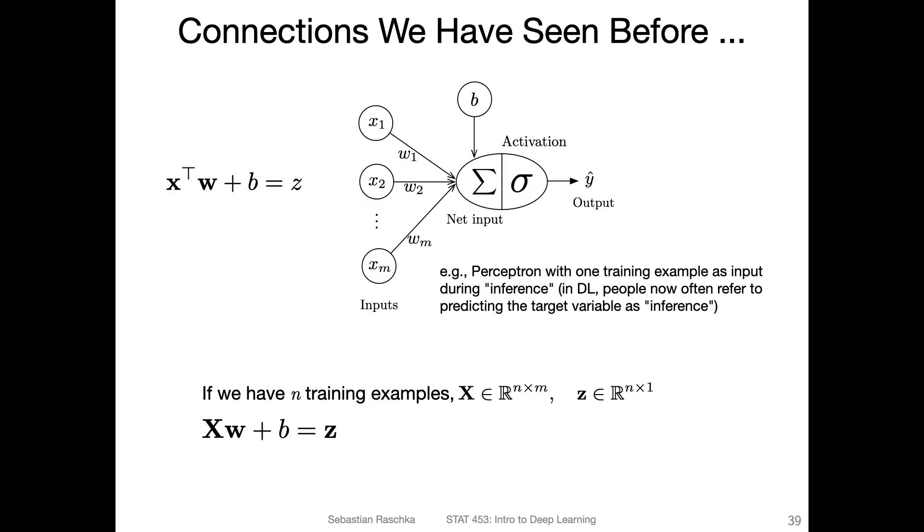This is something we have seen before from the perceptron lecture. At the top, there is a perceptron. Now imagine we do inference. Inference in the context of deep learning means basically predicting the label of an input feature vector. In the perceptron, assume we have one test example as input. How we would do that is as follows: we would have x transpose w plus b, the bias unit, and then get the net input. Then we give it to the activation function, which was the threshold function, and then we get our prediction.